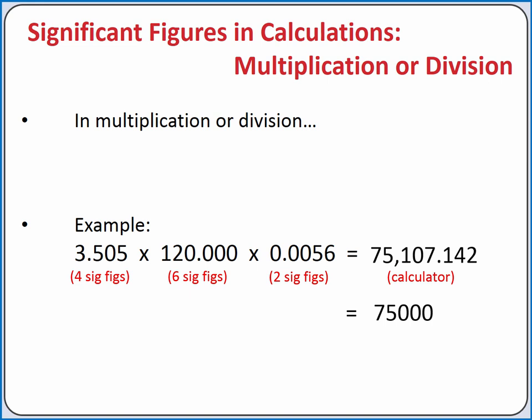However, if we write out our answer in decimal form, the number of significant figures is ambiguous. So we'll need to report our answer in scientific notation to show that we have just 2 significant figures.